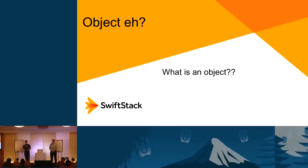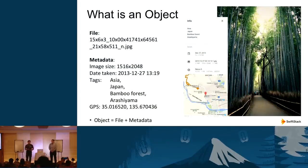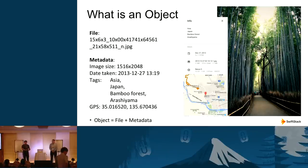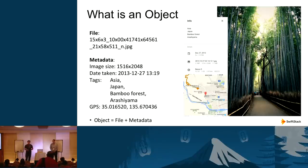So what is an object? An object consists of a piece of data plus its metadata. Here's a picture I took of the bamboo forest on my trip to Japan back in 2013. Along with the file name, it has the size of the picture, the date taken, the extra tags, and the GPS location from my phone. All this information combined with the actual picture makes up an object.